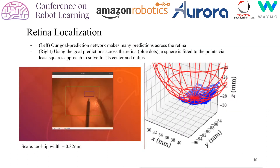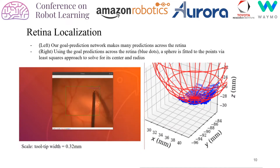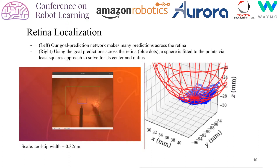Our network could also be used to predict distance and direction across many points on the retinal tissue. These points were plotted and used for reconstructing the eye's surface using the Least Squares method. The eyes were approximated as a perfect sphere, though in reality human eyes have a slightly elliptical shaped retina.